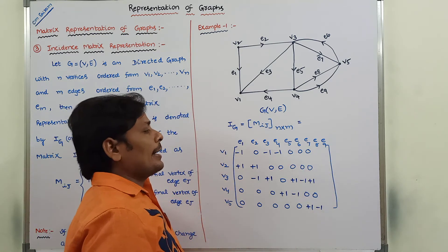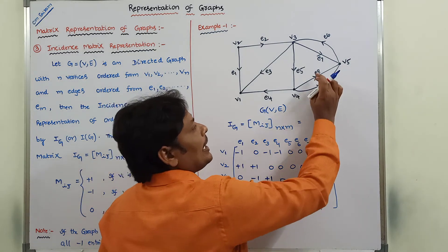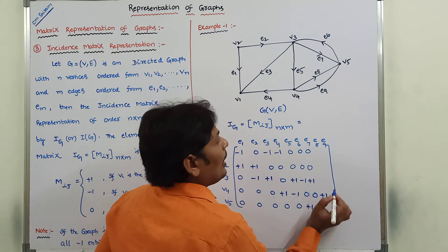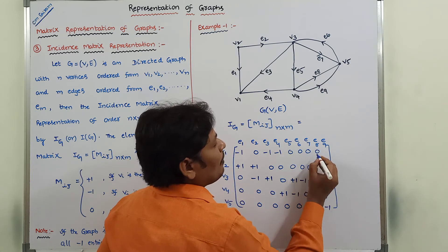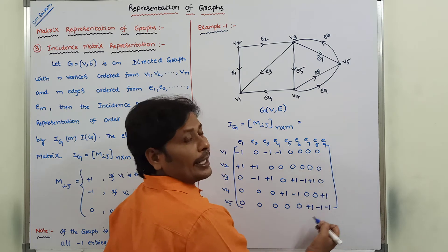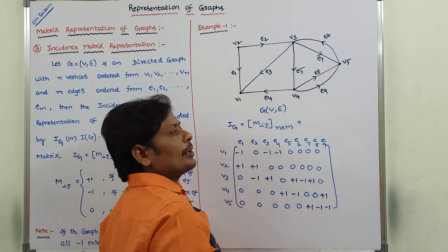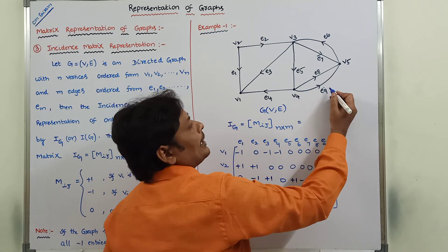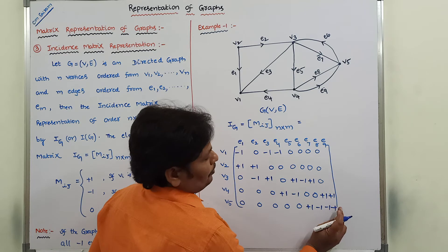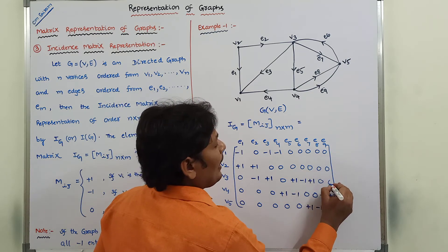For the 8th column, edge E8 is incident on vertices V4 and V5. E8 starts from V4 and ends with V5, so starting vertex V4 gets plus 1 and ending vertex V5 gets minus 1; remaining places get 0. For the 9th column, edge E9 is also incident between V4 and V5. Starting vertex is V4 and ending vertex is V5, so V4 gets plus 1 and V5 gets minus 1; remaining places get 0.